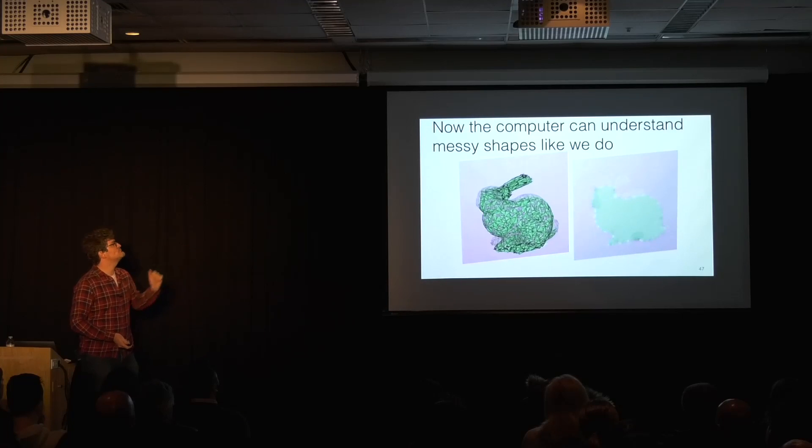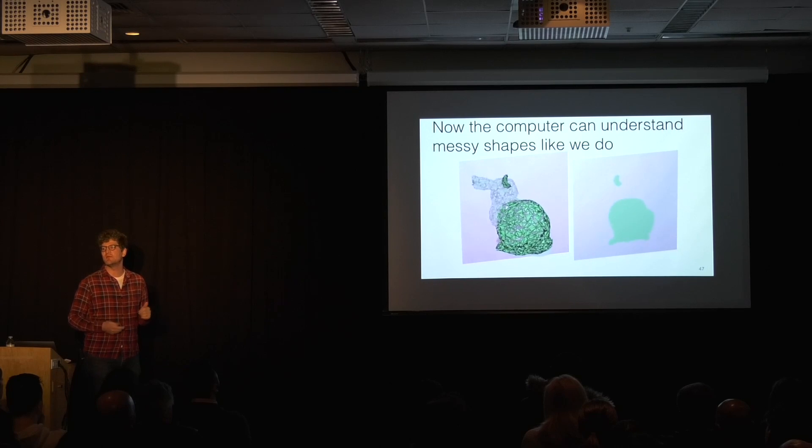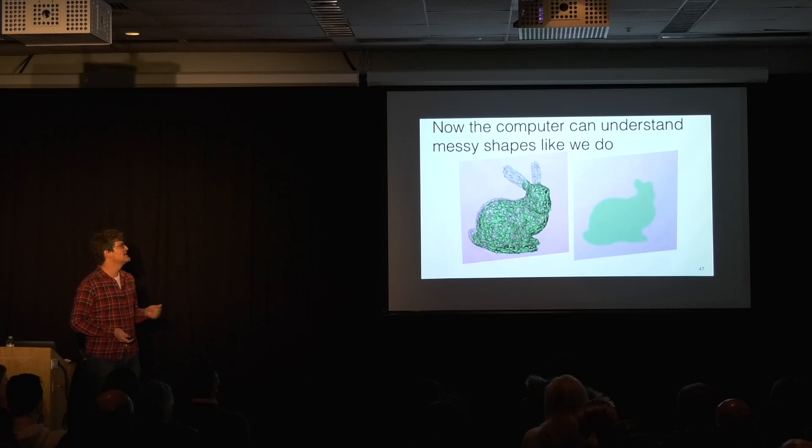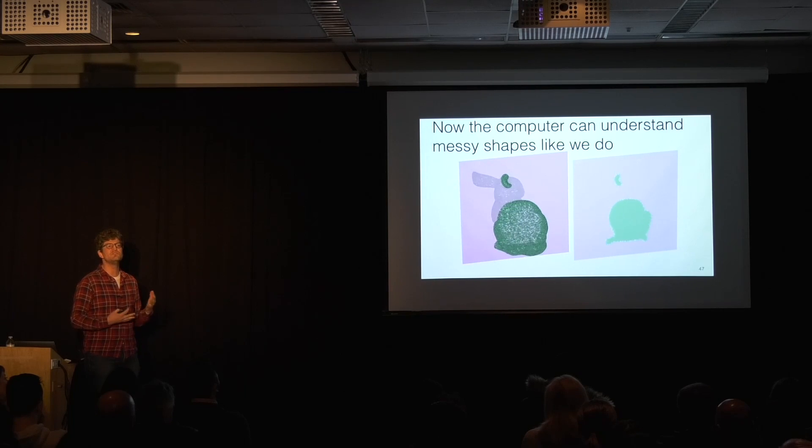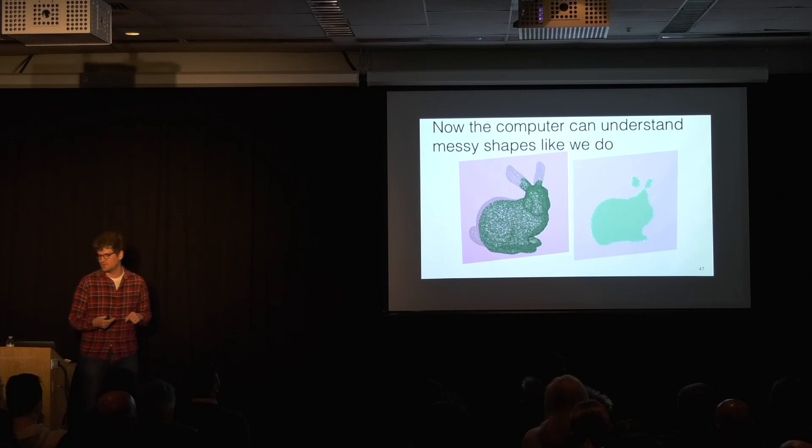So now we can see one example of how the computer can understand messy shapes the same way that we do. So here we're seeing that messy bunny come back, and on the right, we're seeing how the computer now, equipped with the winding number, can determine what's inside and what's outside.